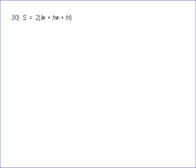On this problem, we're asked to solve for h, and whenever you try to solve for a variable, that means get all of that variable as isolated as possible. So we should first start by trying to get it outside those parentheses. So we're going to do s equals, and do the distributive property: 2Lw plus 2Hw plus 2Hl.